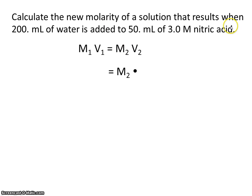Of a solution that results when 200 milliliters of water is added to 50 milliliters of 3 molar nitric acid. So what we're going to be diluting with water is this 3 molar nitric acid. We start with 50 milliliters of 3 molar nitric acid, then we add 200 milliliters of water.